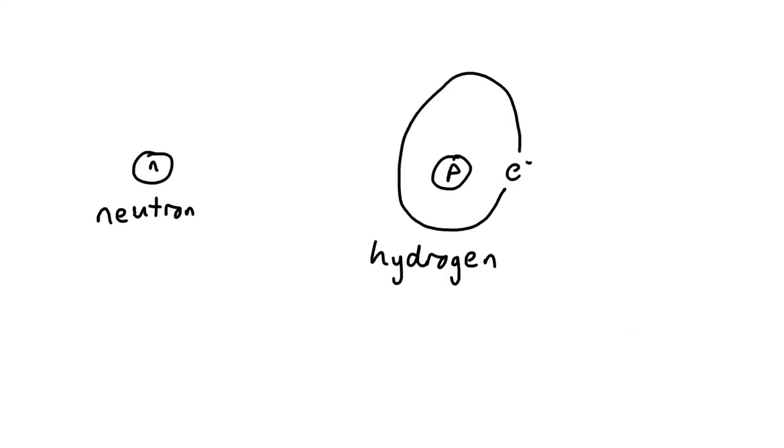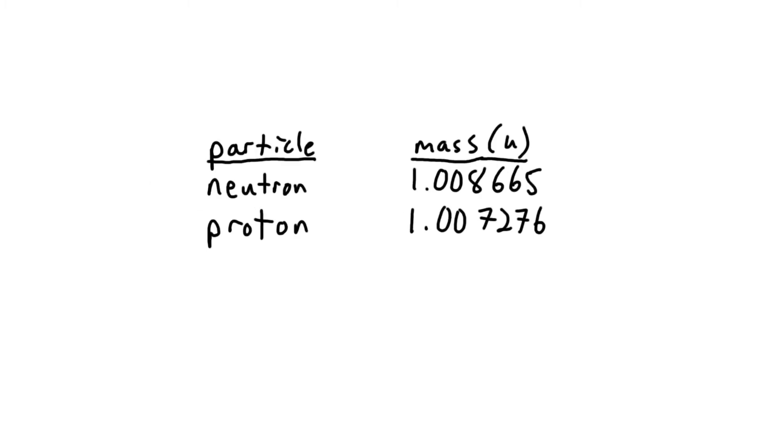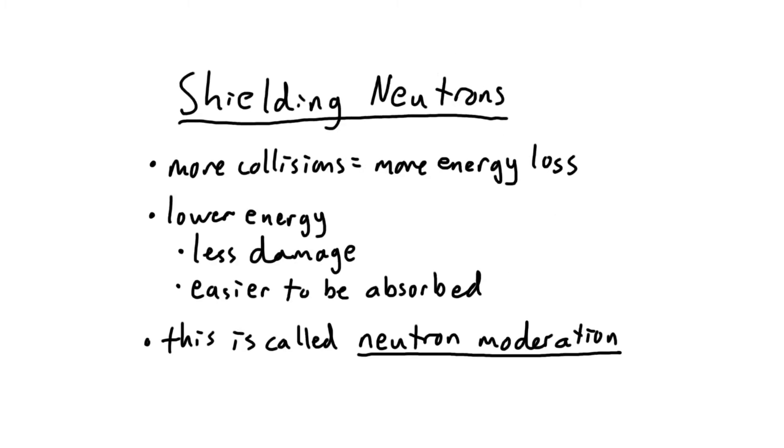From a neutron's perspective, a hydrogen is just a proton. Hydrogen has one proton and one electron, but the electron is so small that we can ignore it. Because the proton and neutron weigh pretty much the same, the neutron loses a lot of energy or speed when it hits a hydrogen atom. Think of shielding neutrons like playing billiards. If you hit one billiard ball into another, and it's not a direct hit, you get a glancing blow. Both balls will come out with a slower speed than the first ball had initially.